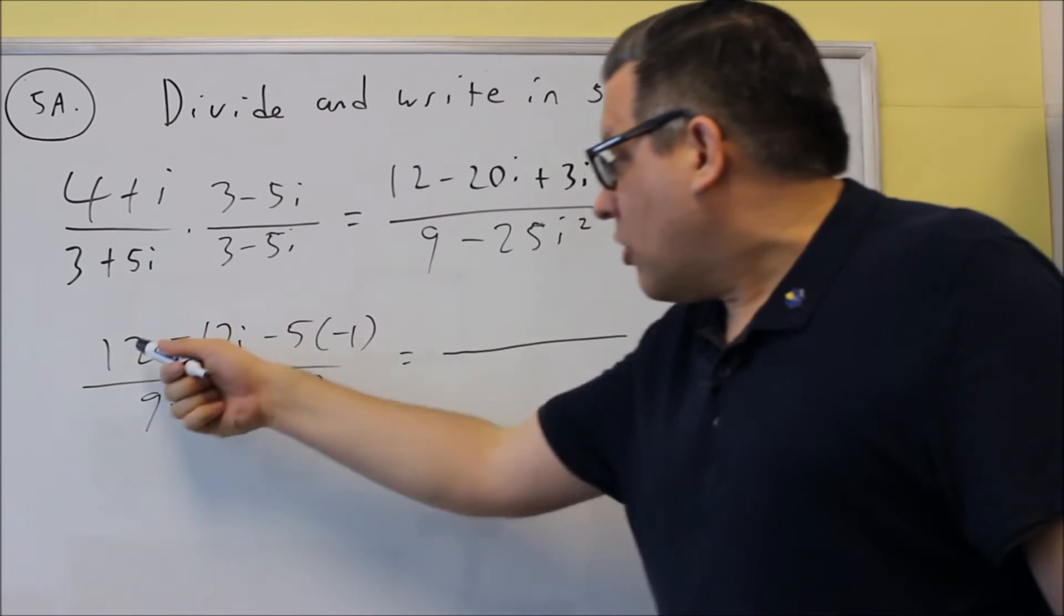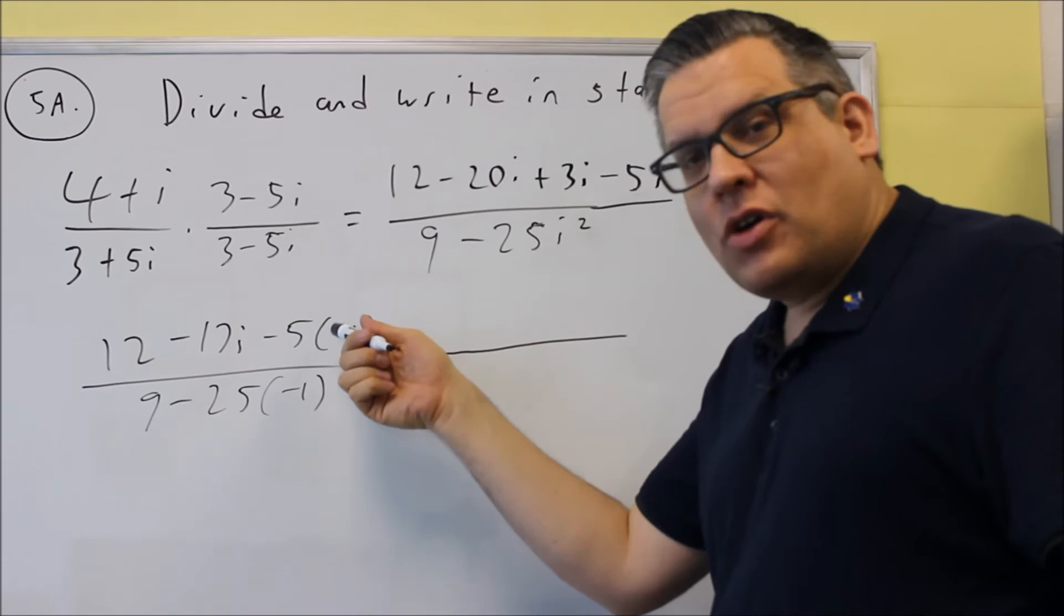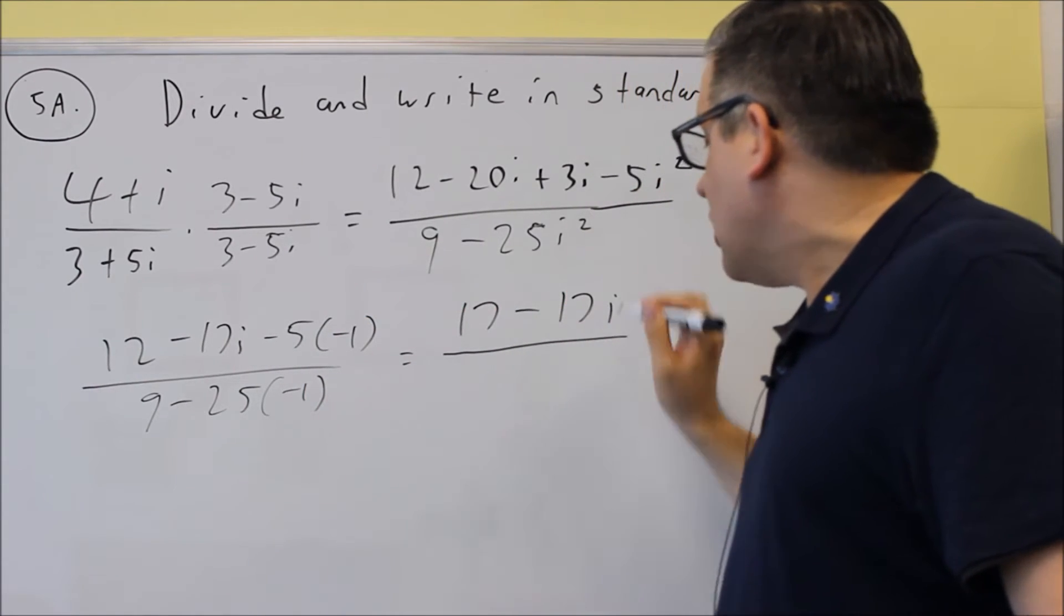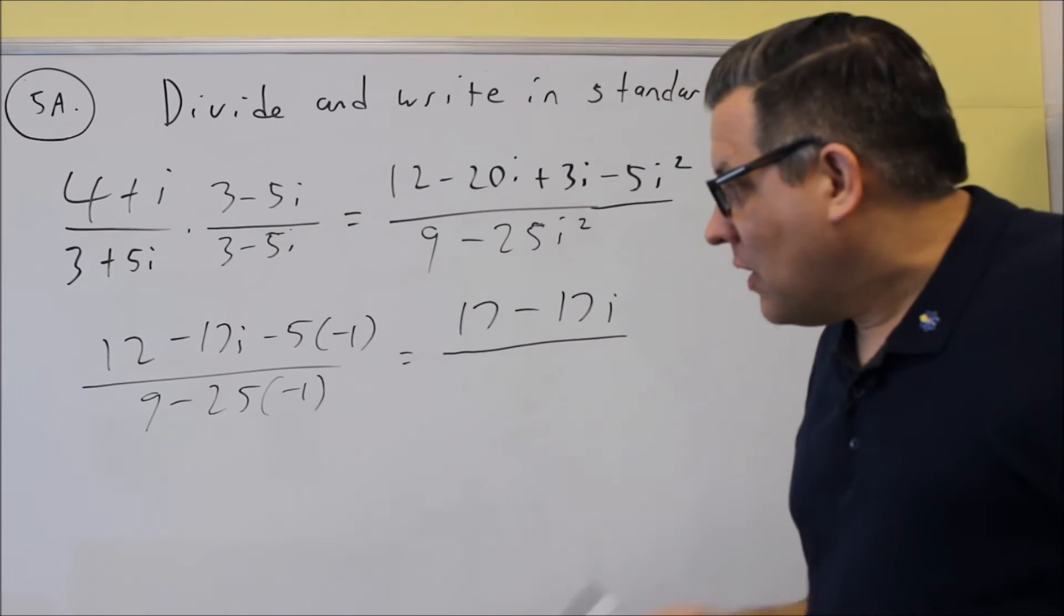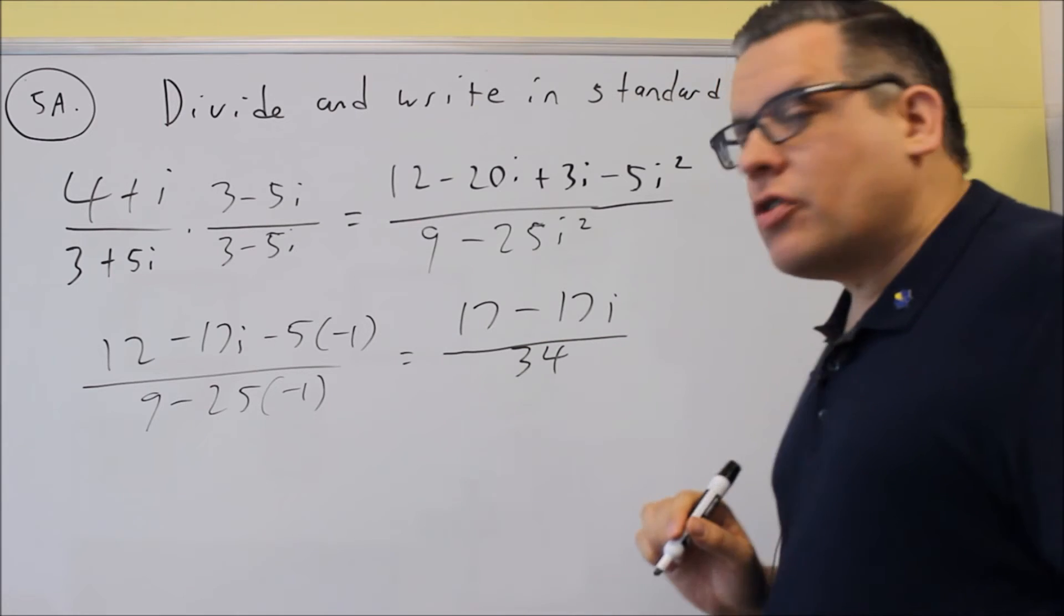So, we can now simplify these numbers. I have 12, this will be plus 5, so it's going to be 17, so I get 17 minus 17i on the top. On the bottom, I get 9 plus 25, which is 34.